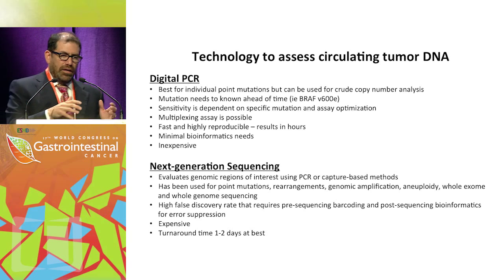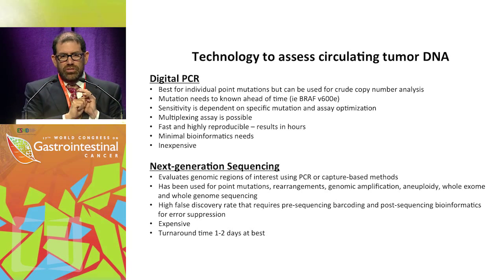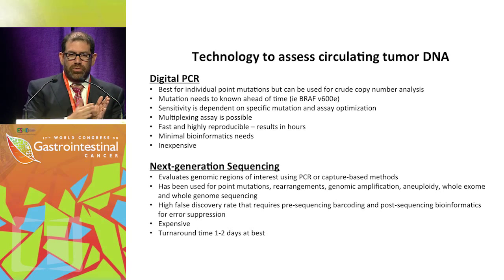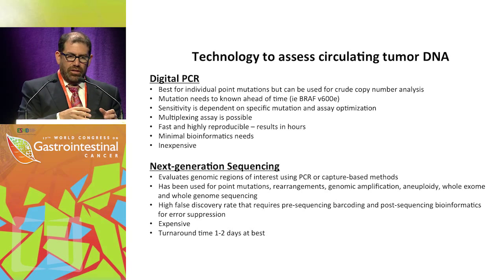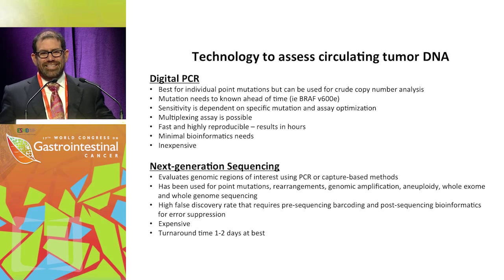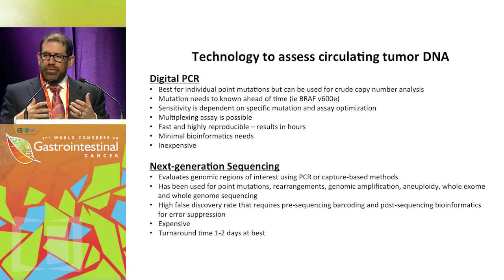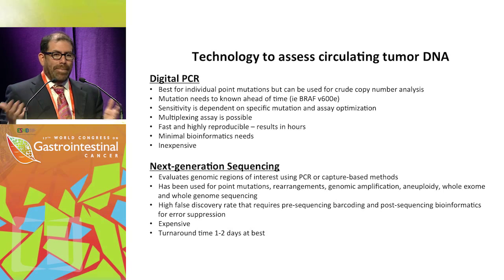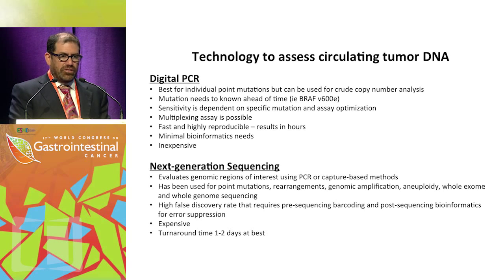Next generation sequencing looks at regions of the genome and can identify mutations across an entire gene. This is helpful for genes like P53 or APC where multiple different mutations are possible, or when you want to discover new mutations, or look at 60 genes at once. The drawback is that this technology is expensive, labor intensive, and takes one to two days at best — with clinical turnaround probably a couple of weeks.